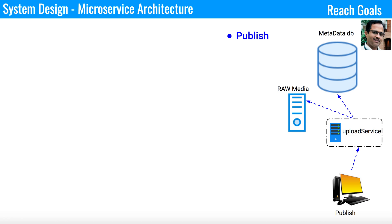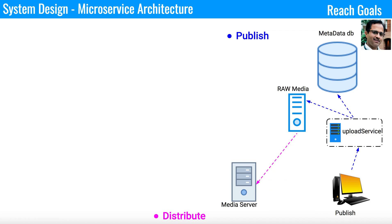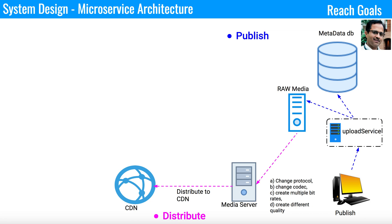Once publishing is done, the next step is distribution. All files in the raw media server are transferred to the media server, which performs protocol changes, codec changes, bitrate creation, and quality conversion. From the media server, files go into the CDN, which is placed across the globe so users close to a CDN get access to files with low latency. I have a separate video explaining how CDN works — I'll put the link in the description.